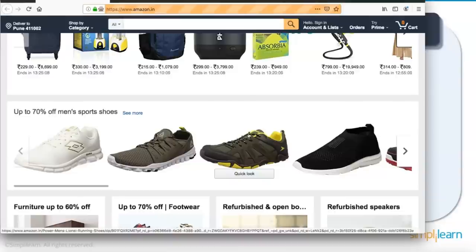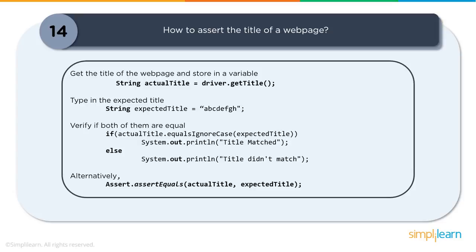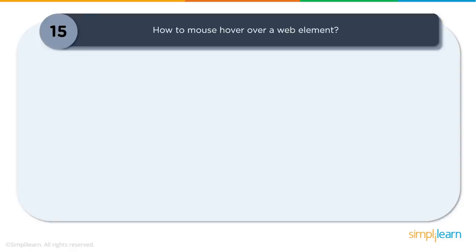Question fourteen: How to assert the title of a web page? Selenium WebDriver provides a get title method that fetches the title of the current page as a string. Store the returned value in a string variable, then use either an if-else statement comparing actual title with expected title, or use assert statements. Selenium provides assert statements to validate whether the title of the web page matches what is expected.